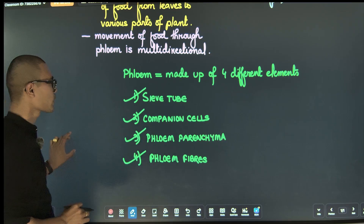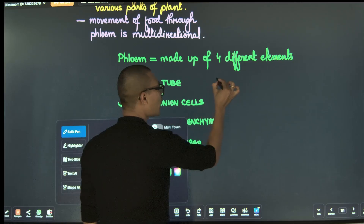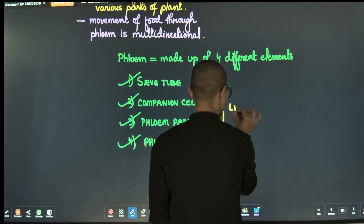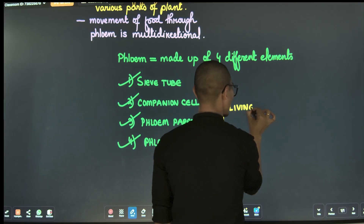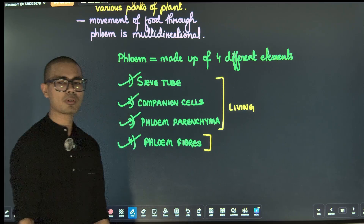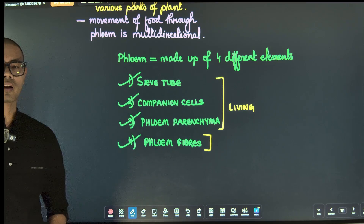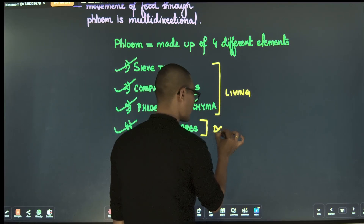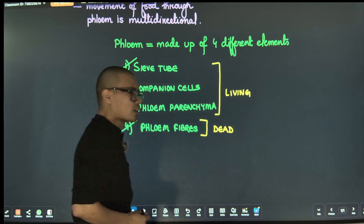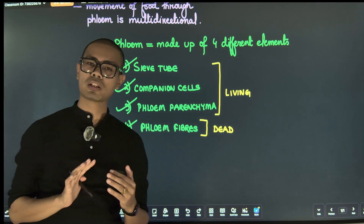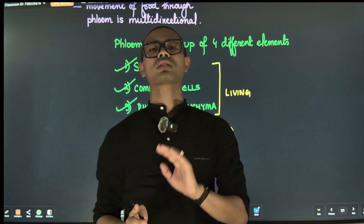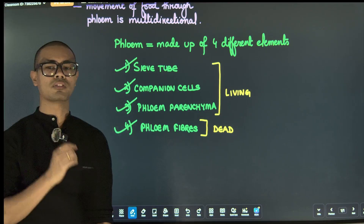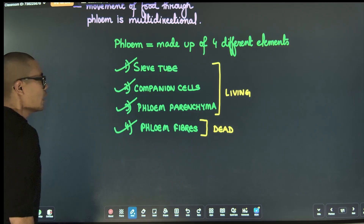Sieve tube elements, companion cells, and phloem parenchyma are living cells, whereas phloem fibers are non-living — they are dead cells. In contrast, in xylem, most components are dead cells, while phloem components are mostly living.